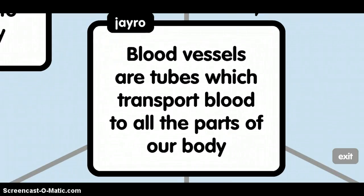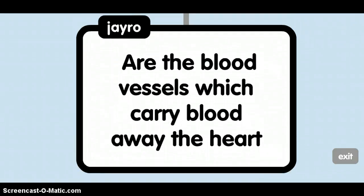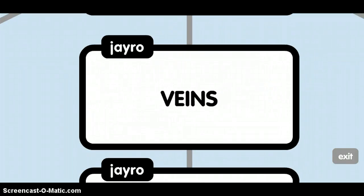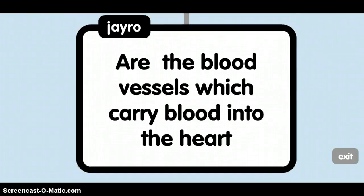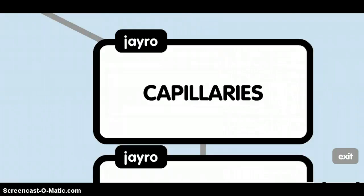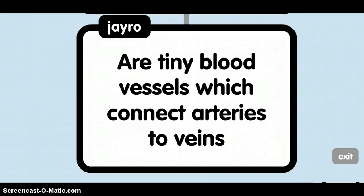Blood vessels are tubes which transport blood to all the parts of our body. Arteries are the blood vessels which carry blood away from the heart. Veins are the blood vessels which carry blood into the heart. Capillaries are tiny blood vessels which connect arteries to veins.